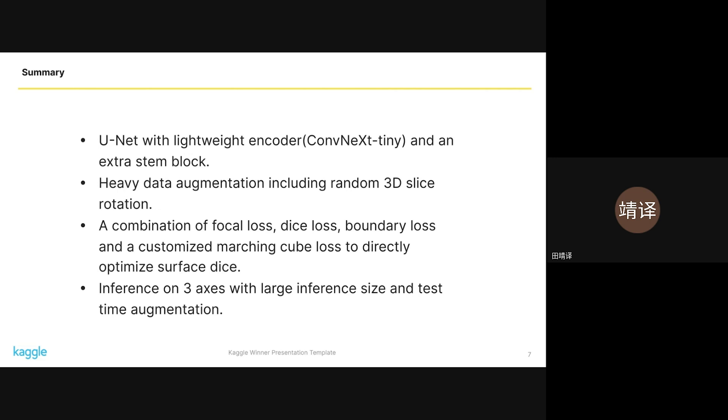To summarize our solution, our model is a customized U-Net architecture leveraging a lightweight encoder component EfficientNet-Tiny with an additional stem block for improved feature extraction. To tackle the data challenges, we employ heavy data augmentation techniques including random 3D slice rotations. Our loss functions are a composite of focal loss, dice loss, boundary loss, and a customized Marching Cube loss aiming to optimize the surface dice score directly.